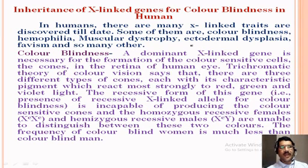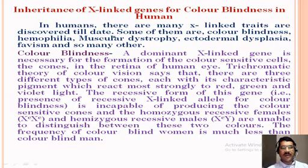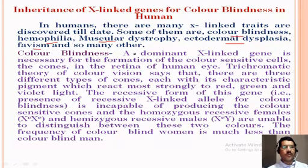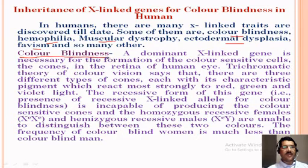In human beings, there are many X-linked traits discovered till today by different geneticists. Some of them are color blindness, hemophilia, muscular dystrophy, ectodermal dysplasia, fabism, and many others. Today we will discuss color blindness, which is one of the most important traits of X-linked genes.